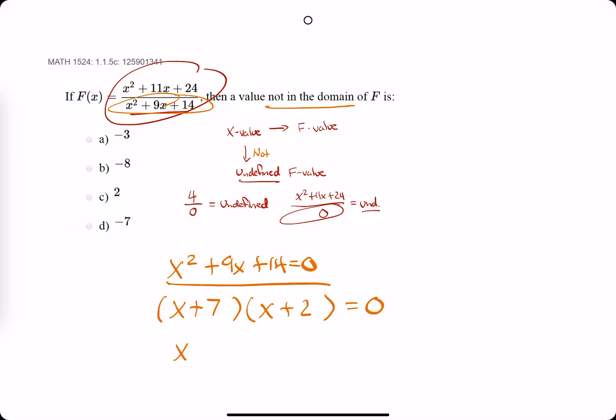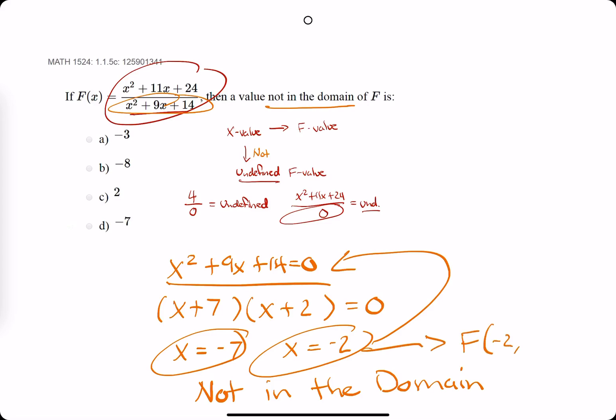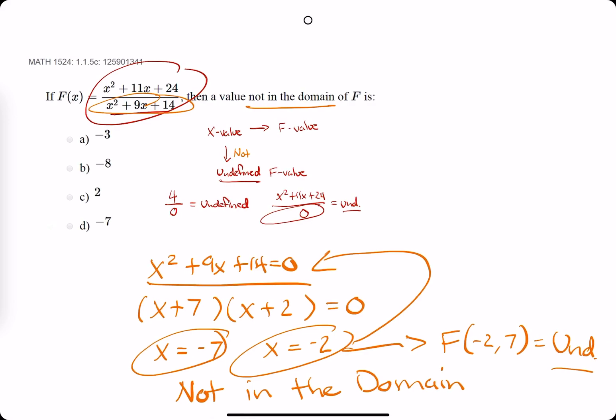Then we set each of them equal to 0, and we get that x is negative 7 and x is negative 2. These are the x values which make the denominator equal to 0, which means these are the two x values that are not in the domain. Because if we were to plug in negative 7 and negative 2 into f, we would get an undefined function value.